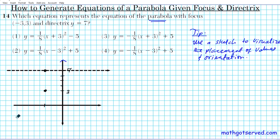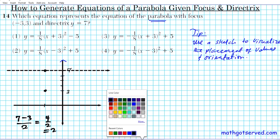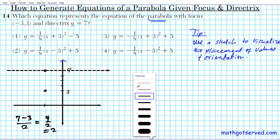To find the median, all you do is subtract the two: 7 minus 3 divided by 2. So 7 minus 3 is 4 over 2, which is 2. What we just found is the p value. So the p value that we're going to be using to generate the equation of our parabola is 2.